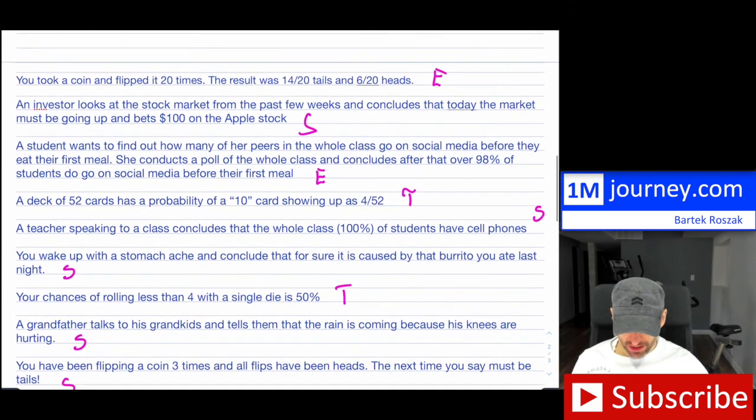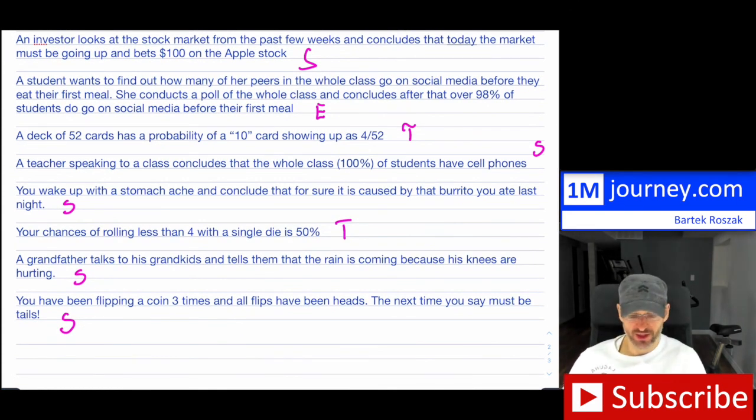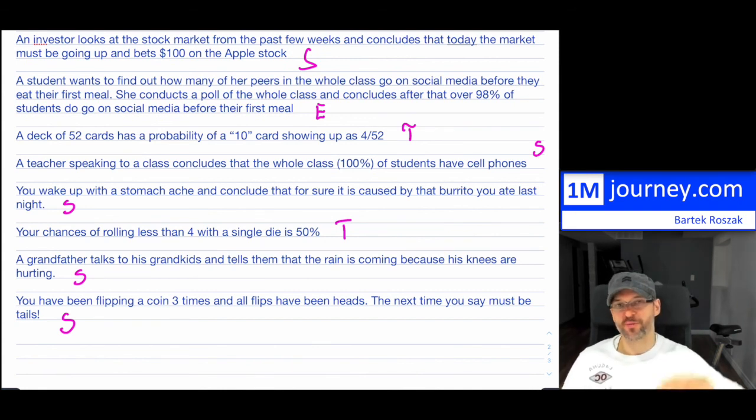So those were some examples of subjective, then you had some empirical, and then you had some theoretical. So I hope that these give you a little bit of a glimpse so that you can distinguish between the theoretical experiments in terms of empirical and then subjective, which is hunches, intuitions that you may have or you're drawing conclusions based on certain things that you've seen in the past. Thanks for watching. See you in a future video. Bye, everybody.